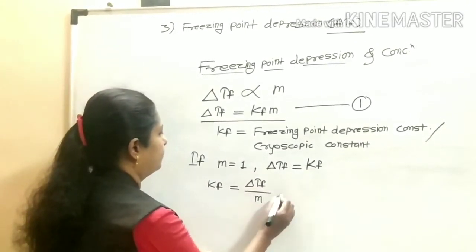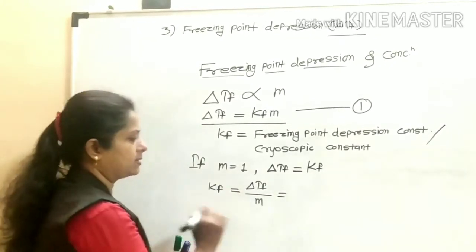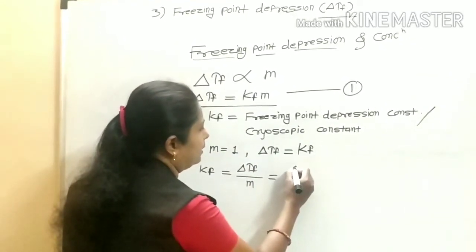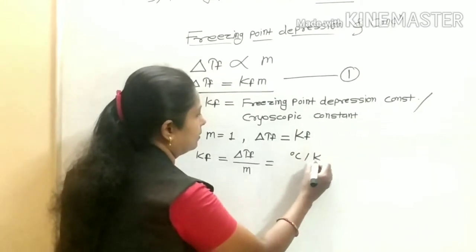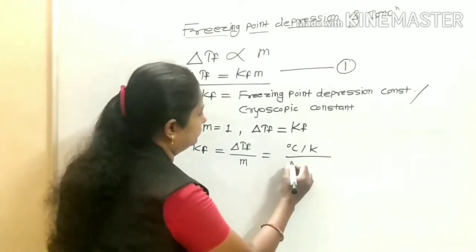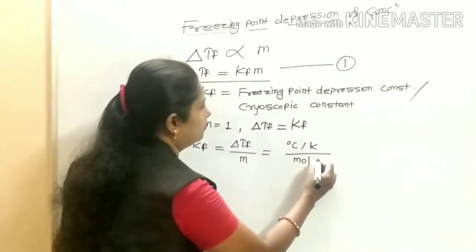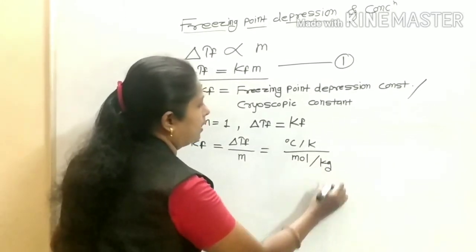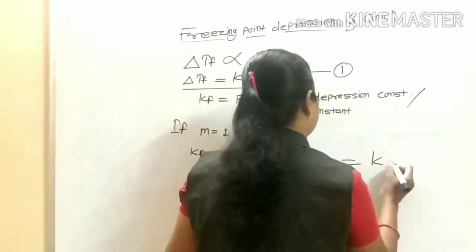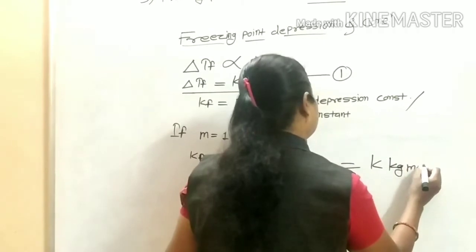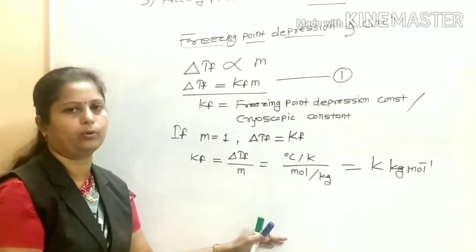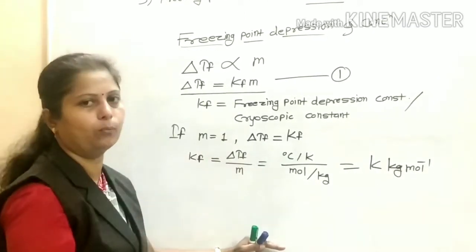Kf is equal to Delta Tf divided by small m. The unit of Delta Tf is Kelvin (or degree Celsius), and the unit of molality is mol per kg. Therefore, the unit of Kf is Kelvin·kilogram per mole, or degree Celsius·kilogram per mole.